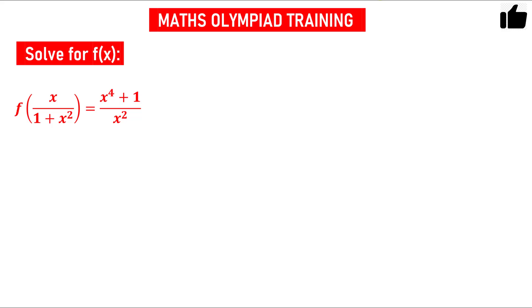Hello friends, in this problem you have to solve for f(x). You have been given a functional equation: f of x divided by 1 plus x square equals x⁴ plus 1 divided by x square. Your target is to find f(x).